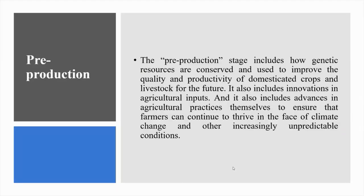The pre-production stage: the sustainability of a food system begins well before a crop is grown or an animal raised. This pre-production stage includes how genetic resources are conserved and used to improve the quality and productivity of domesticated crops and livestock for the future. It also includes innovations in agricultural inputs such as fertilizer or crop protection products, which can help boost yields and incomes while preventing further land from being converted for cultivation, as well as advances in agricultural practices to ensure farmers can continue to thrive in the face of climate change.